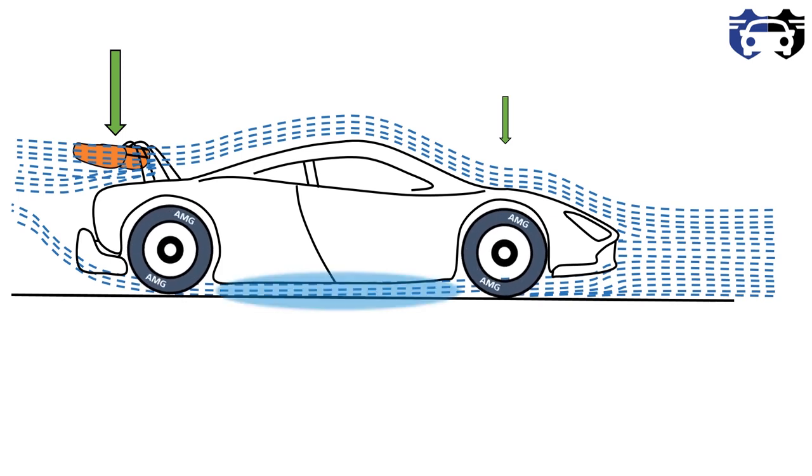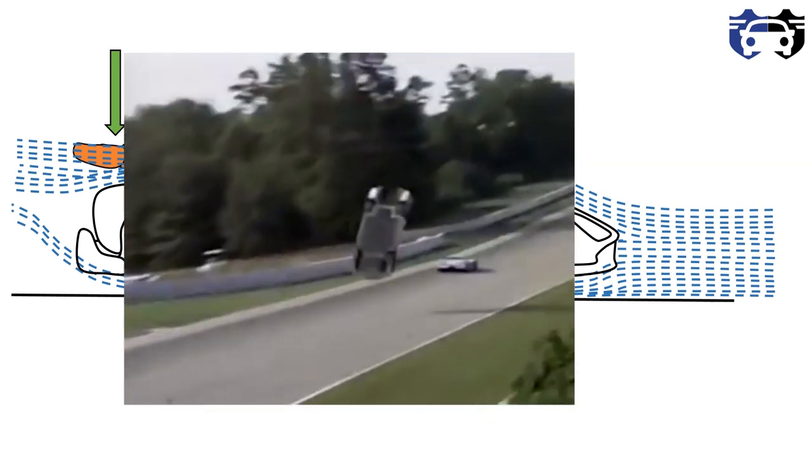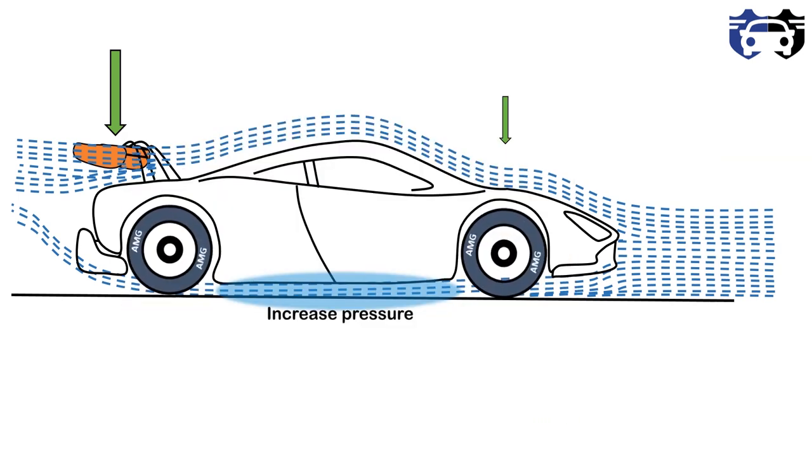...it will cause an increase in pressure at the bottom. The unbalancing of load between front and rear and high pressure at bottom will cause an effect like this, and it's very dangerous. For preventing this, we will use the front spoiler.